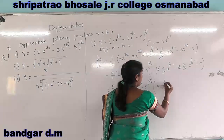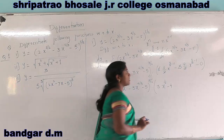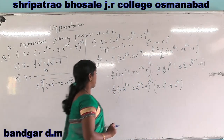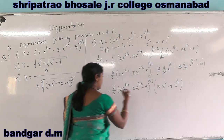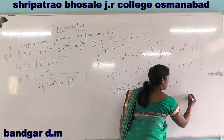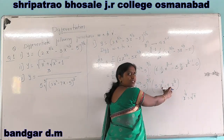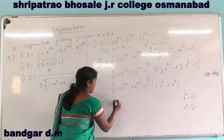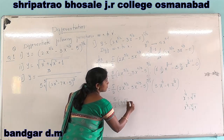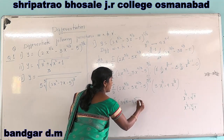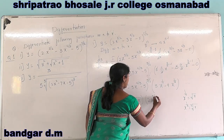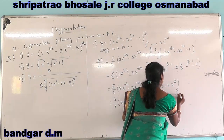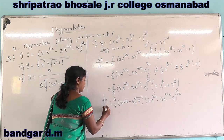Continuing: minus 4x raised to 4 by 3 minus 1, that is 4 minus 3 upon 3, giving x raised to 1 by 3. This is our answer. We write the least power polynomial first: x raised to 1 half can be written as square root of x, and x raised to 3 by 2 can be written as cube root of x. So dy by dx for the first question is complete.